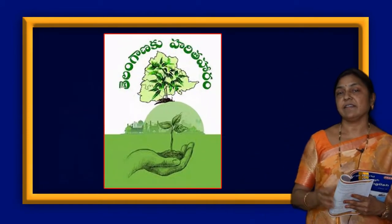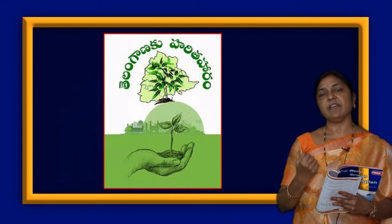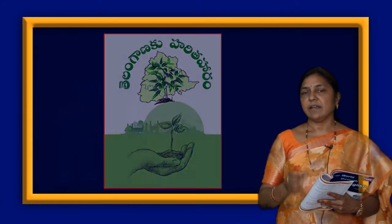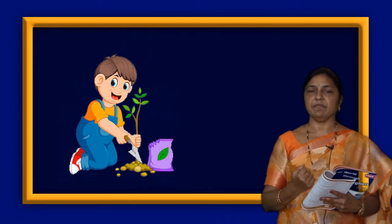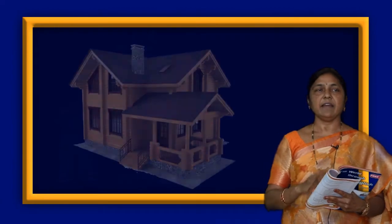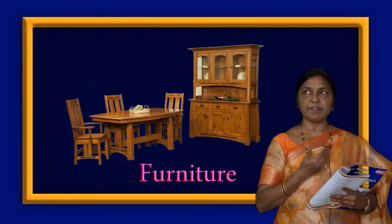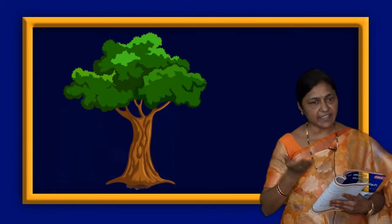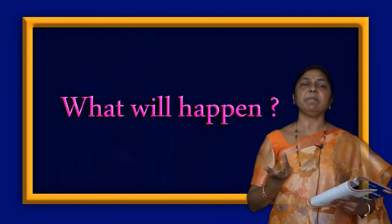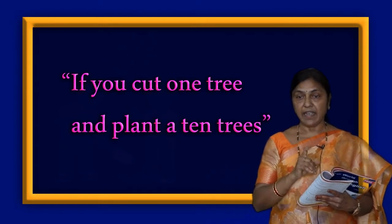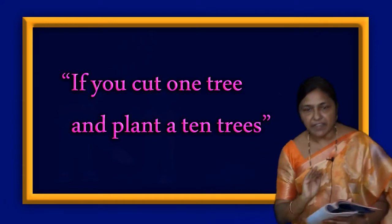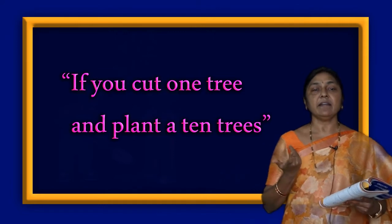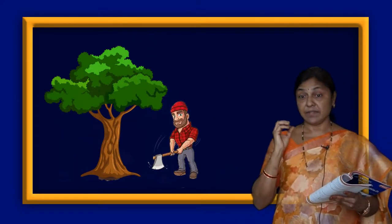Every one of us should plant at least one tree every year. The government introduced Haritha Hara, and in Telangana we are planting many trees. But we are not taking care of them — we should take care of them. We are building new houses and making beautiful furniture from the wood of trees, so we are cutting them down. If you cut a big tree and plant a small one, the air becomes polluted. There is a slogan: if you cut one tree, plant ten trees. We are cutting big trees but planting small ones — that is not enough.